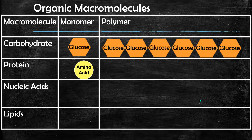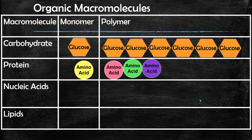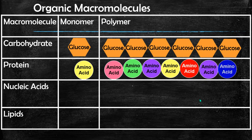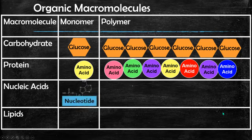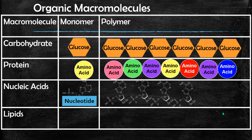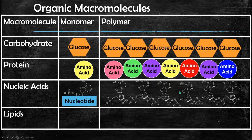Then we have protein. Protein's monomer is made out of amino acids. A chain of amino acids is called a polypeptide, and that is the polymer of proteins. And then we have our DNA and RNA — our nucleic acids. Their monomers are called nucleotides. A single strand of nucleotides would be RNA, but a double strand would be called DNA.